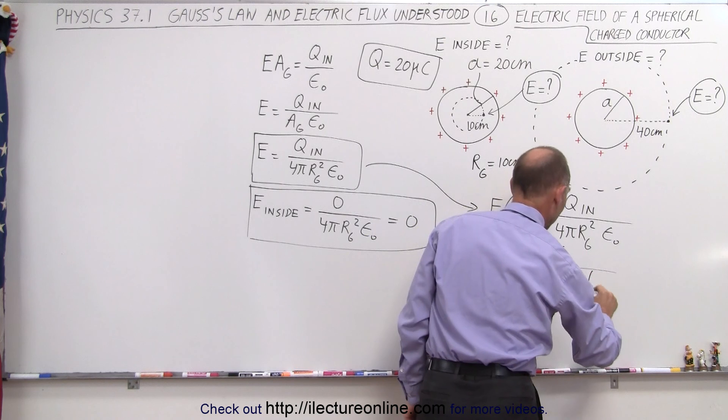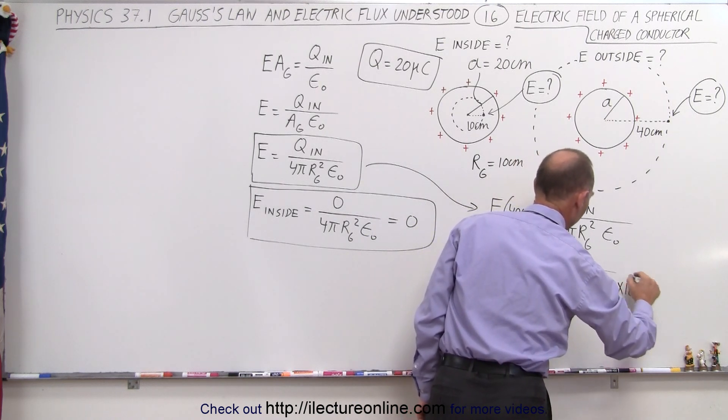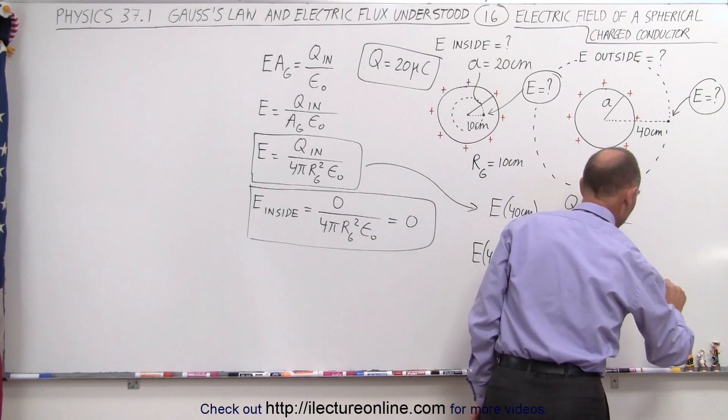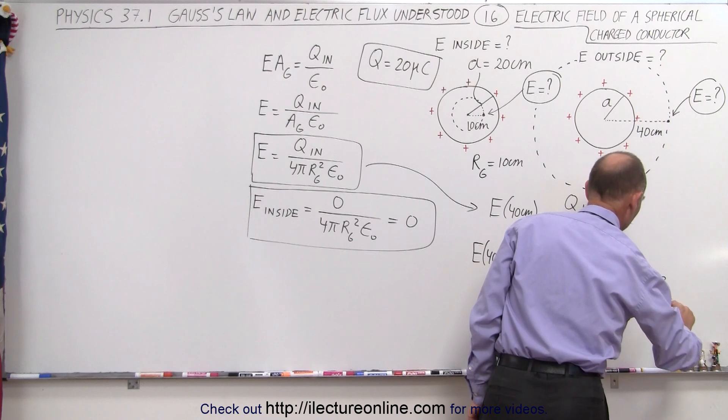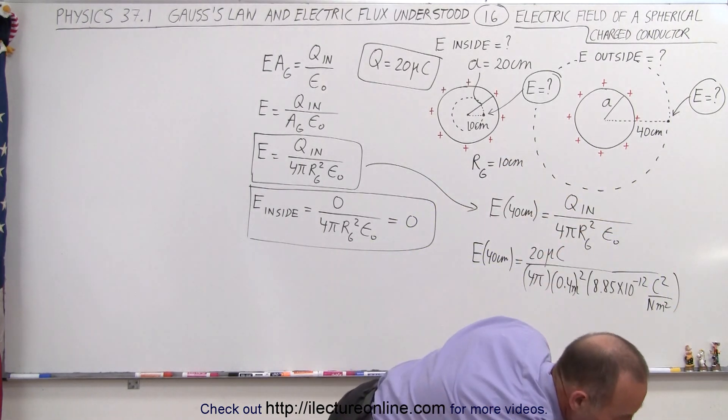Always make sure you convert this to meters, and we square that times 8.85 times 10 to the minus 12. Of course, that would be meters here, I'll put in meters, and this would be coulombs squared per newton meter squared. There we go, and we'll plug in the units.